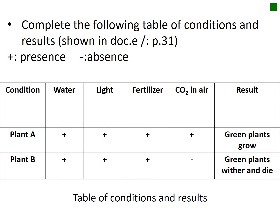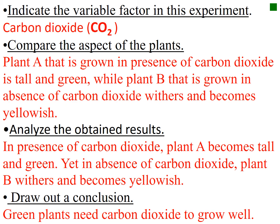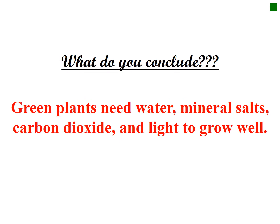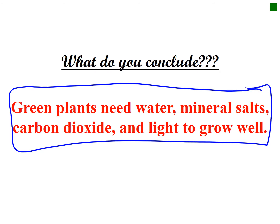In the table of conditions, all are the same except for CO2. In its presence, the plant grows normally; in its absence, it withers and dies. Plant A, grown in the presence of CO2, grows tall and green, while plant B, in the absence of CO2, withers and becomes yellowish. Conclusion: plants need water, minerals, sunlight, and carbon dioxide in order to grow well.